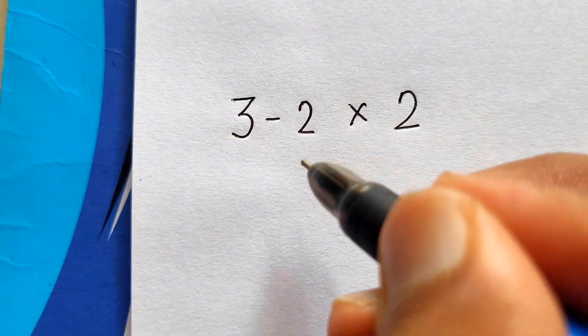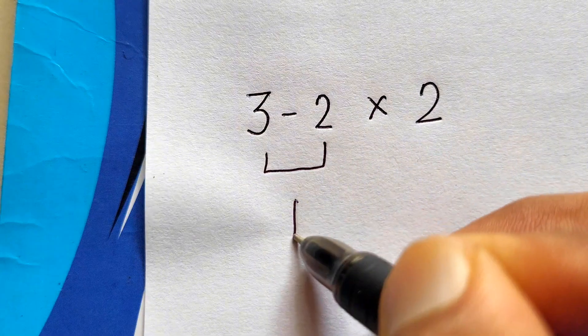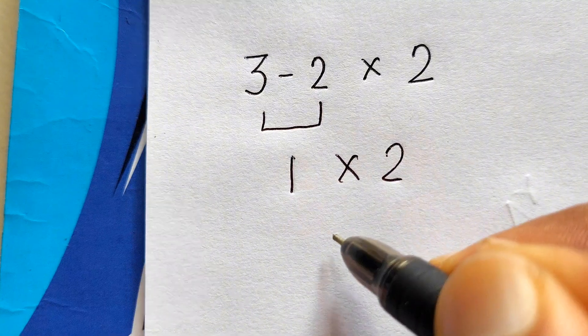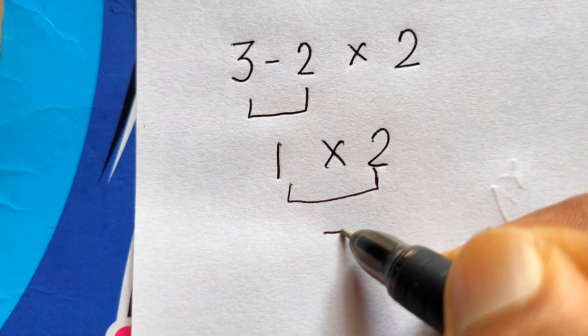Now I know most people will probably solve this expression like this: 3 minus 2 gives us 1, and now we are left with 1 times 2. Now 1 times 2 gives us simply 2.